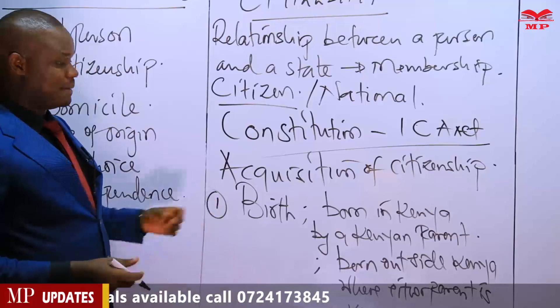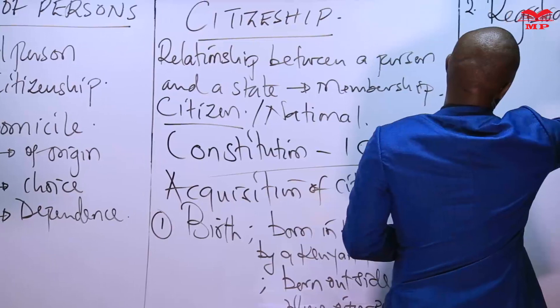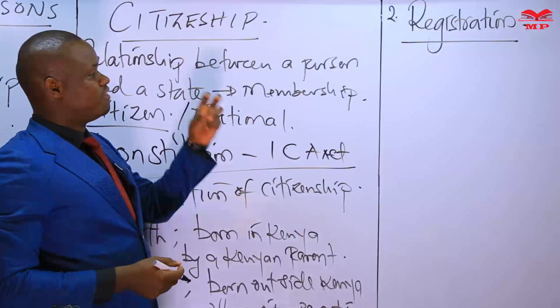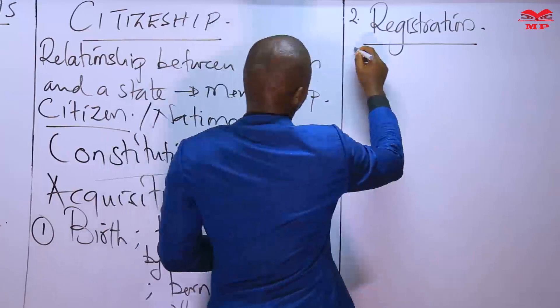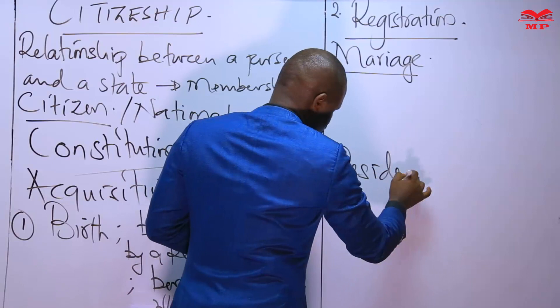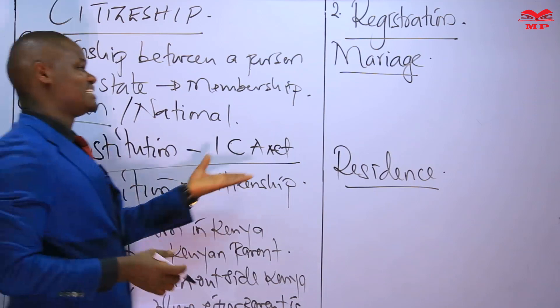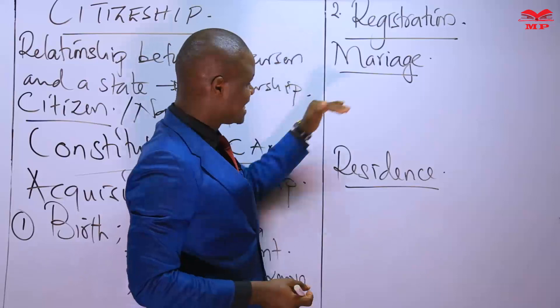The second possibility by which you could also be acquiring Kenyan citizenship is by registration. You could register to be a Kenyan citizen. There are two categories of persons who qualify for registration: persons who want to register as citizens by virtue of marriage, and persons who want to register as Kenyan citizens by virtue of lawful residence in Kenya.